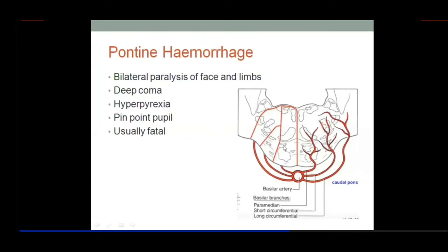Focus on the important structures. If the paramedian artery undergoes hemorrhage, the corticospinal fibers passing through this region are affected — that leads to paralysis. If we are talking about bilateral hemorrhage of the basilar artery, the effects are bilateral.